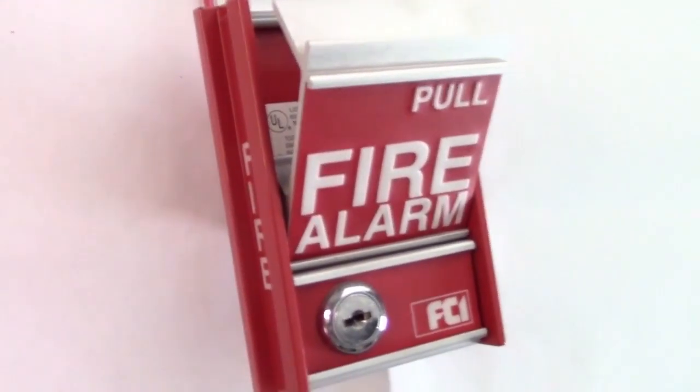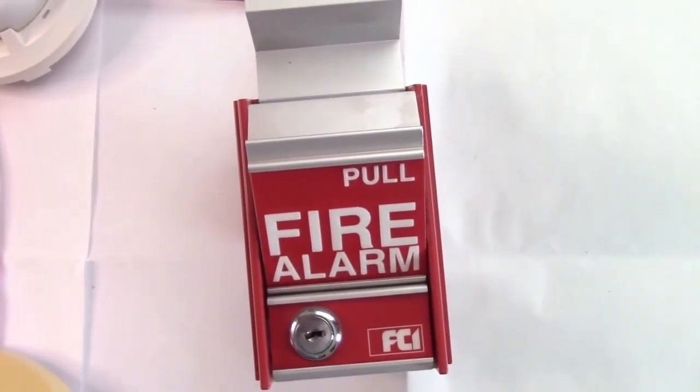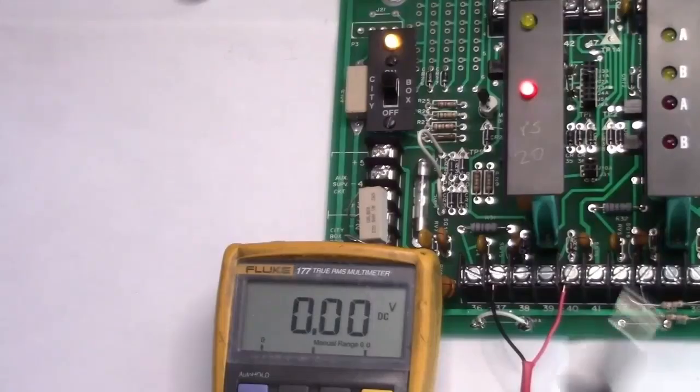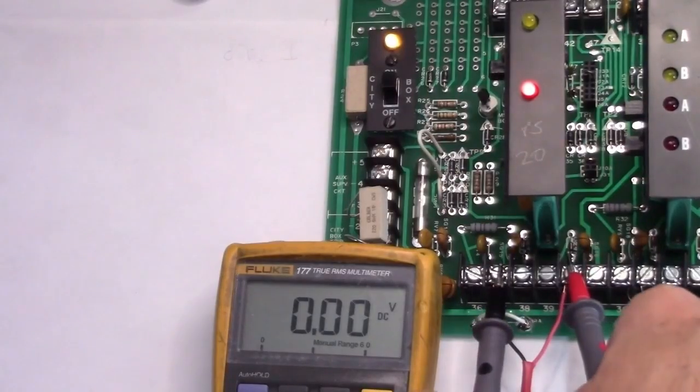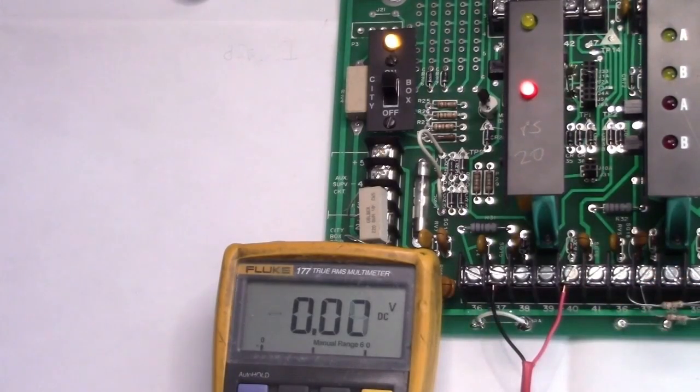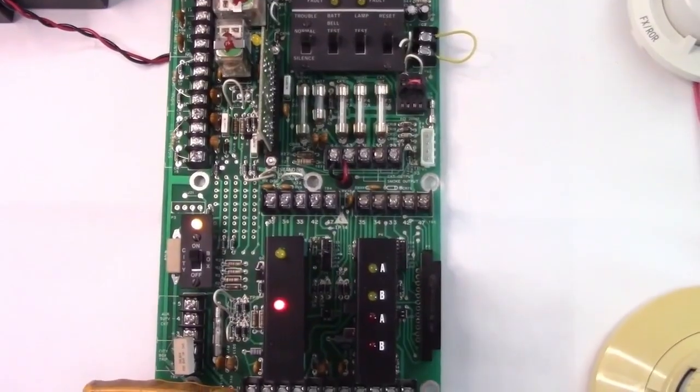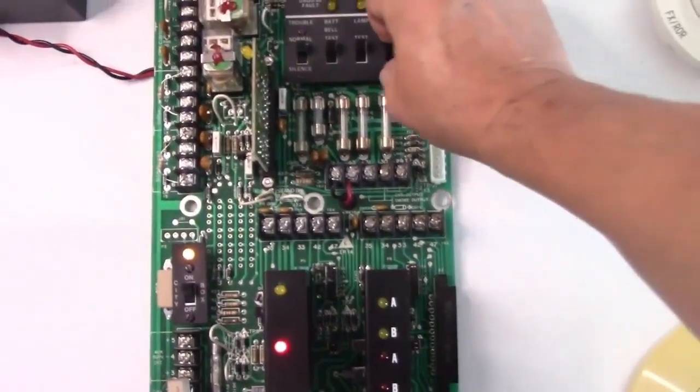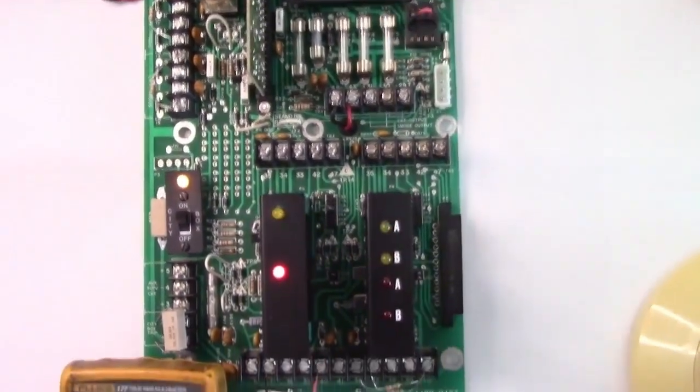Activating a pull station will put a short on the zone. We'll expect to read zero at the panel. Measuring across the terminals, you'll see that it is zero volts. That's how you know you're looking for a pull station, a heat detector, or a short in the wiring. You need to resolve the short before resetting. It'll just go right back into alarm if you don't.